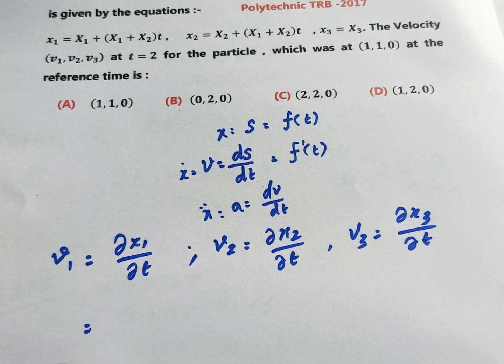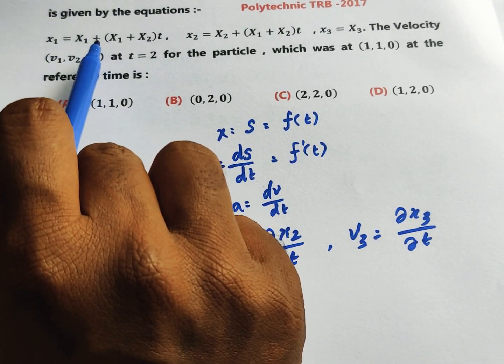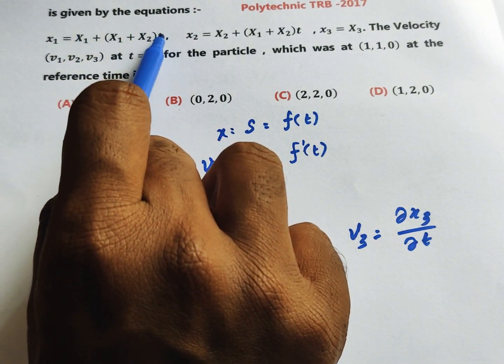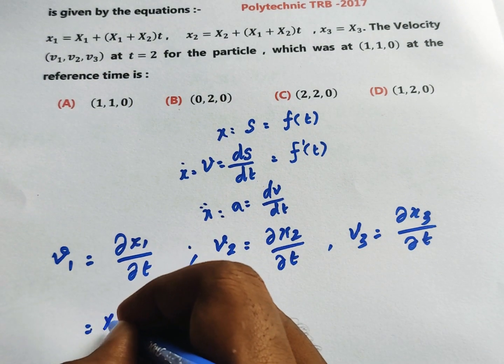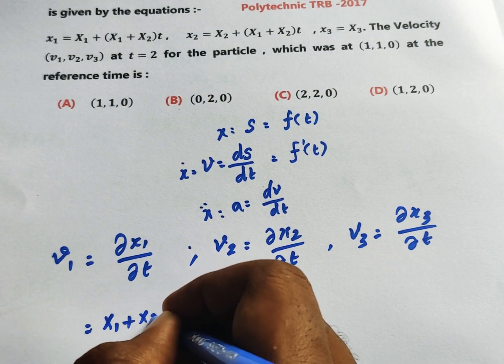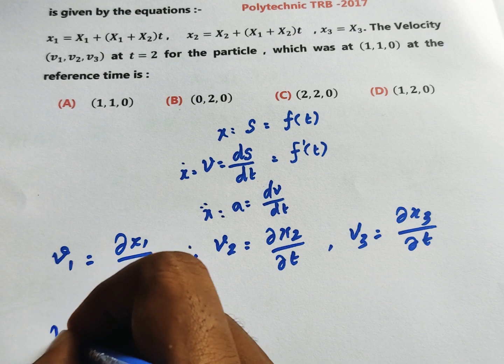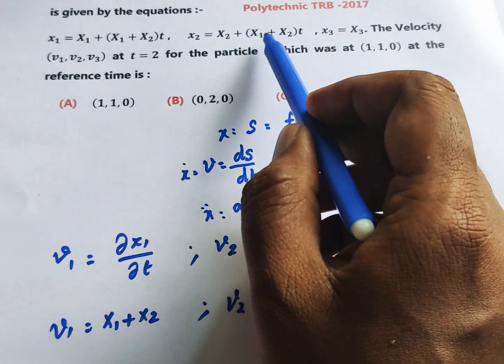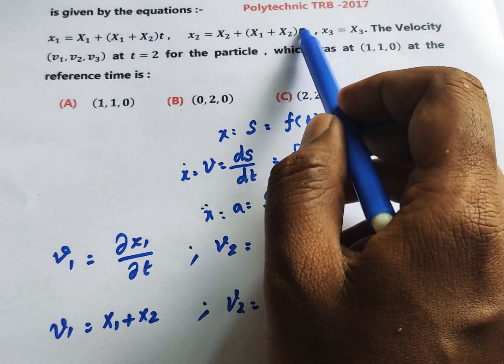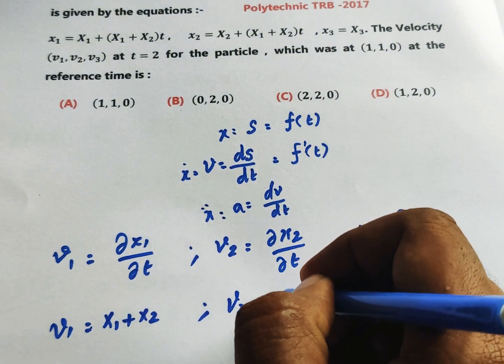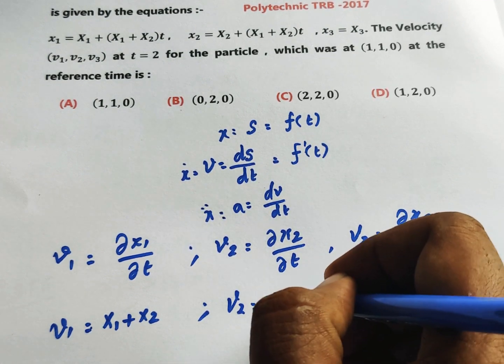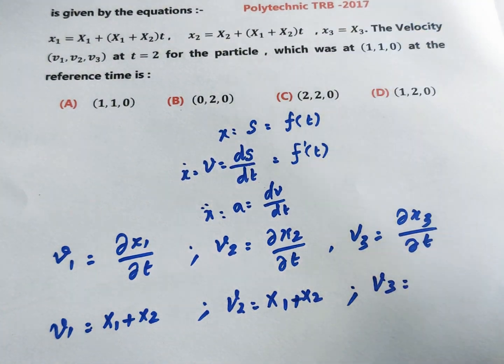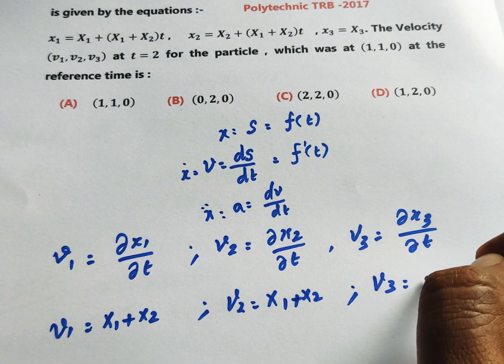v1 = dx1/dt. Differentiating x1 with respect to t: v1 = X1 + X2. Similarly, v2 = dx2/dt, which is X2 + (X1 + X2)t differentiated with respect to t, giving v2 = X1 + X2. And v3 = dx3/dt, which is X3 differentiated with respect to t, so v3 = 0.